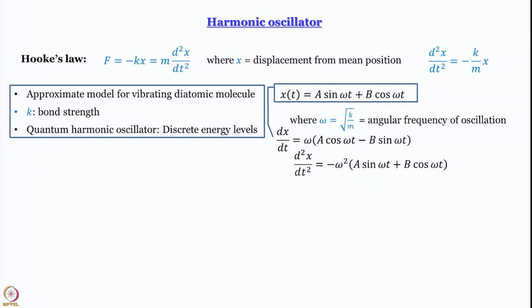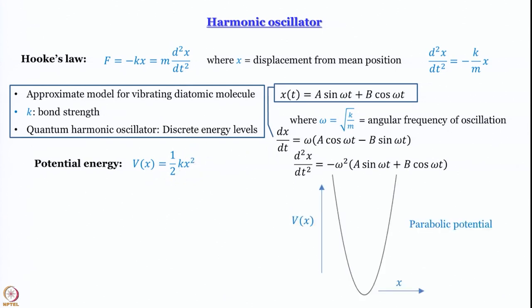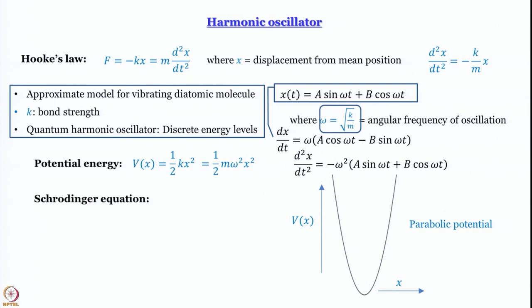This result comes from classical mechanics. To go into the quantum world, we write the Schrödinger equation. The potential energy in this case is ½kx². This is a parabolic potential. Using the relationship between angular frequency ω and force constant k, we write the potential as ½mω²x². Plugging into the Schrödinger equation: −(ℏ²/2m)(d²ψ/dx²) + ½mω²x²ψ = Eψ.